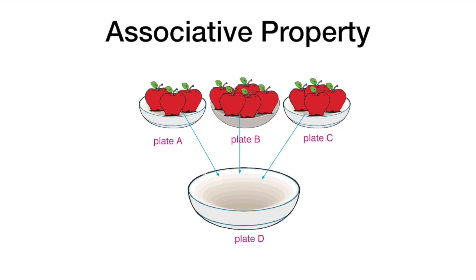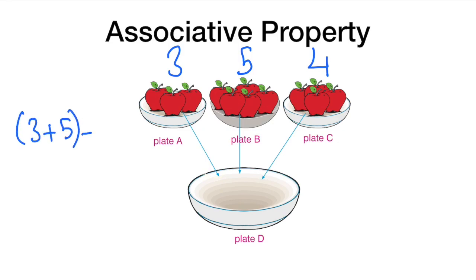What is the associative property? As you see there are three plates here. Let's count how many apples there are in total: here three apples, here five apples, and here four apples. I want you to add three and five first, then four. The result will be eight plus four,